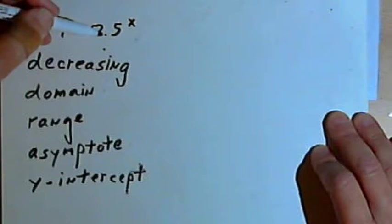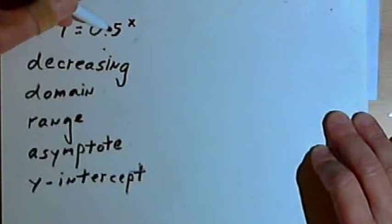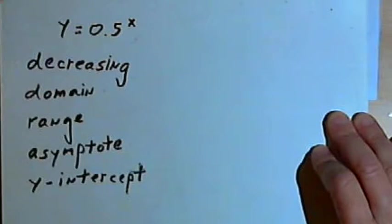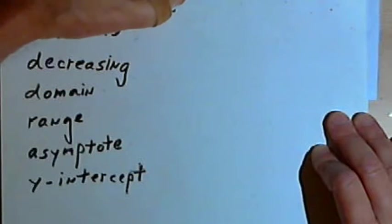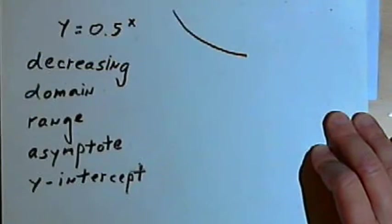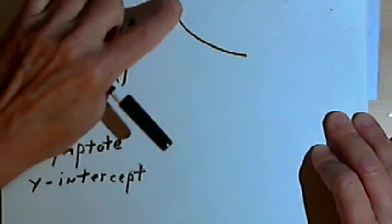When the base of an exponential function is between 0 and 1, that function is going to be a decreasing function. In other words, going from left to right, it's going to curve downwards. So we know this is a decreasing function.